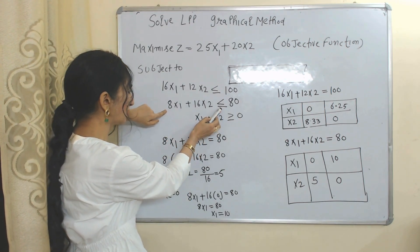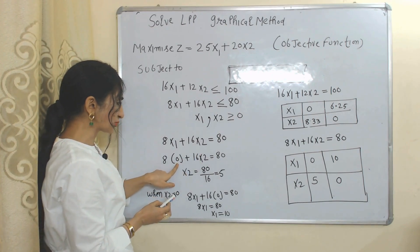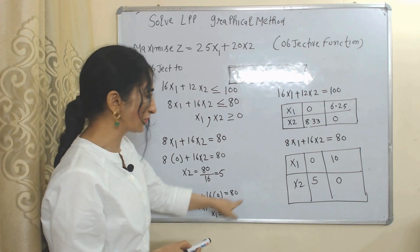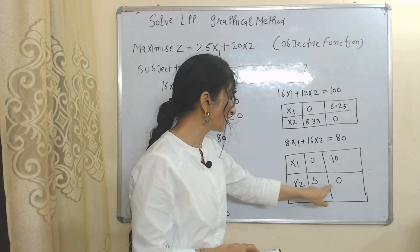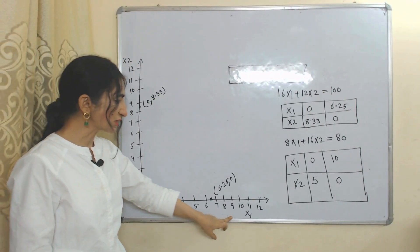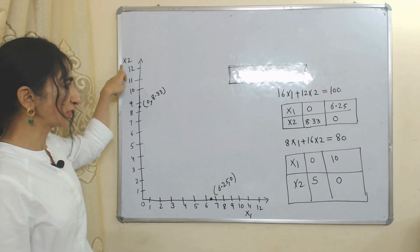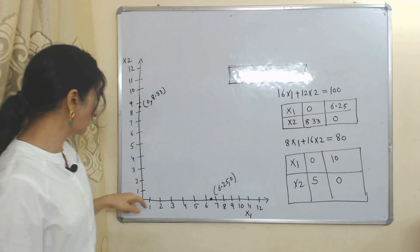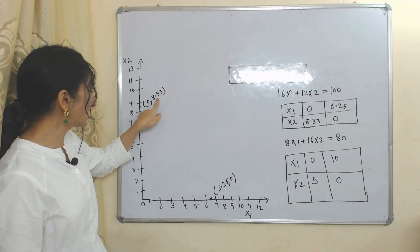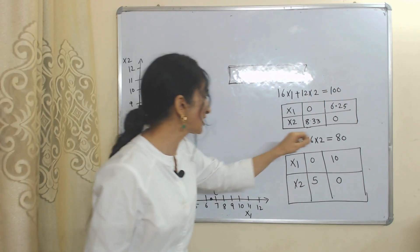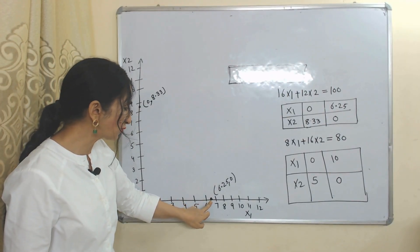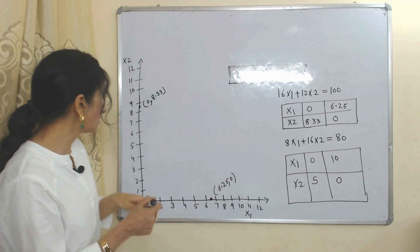Similarly for the second constraint, we convert the inequality to equality. When we put x1 = 0, x2 becomes equal to 5. When we put x2 = 0, x1 becomes equal to 10. Now we will plot all these points on the graph. On the x-axis we have x1 and on the y-axis we have x2. When x1 is 0, x2 is 8.33; when x2 is 0, x1 is 6.25. We join these two points.